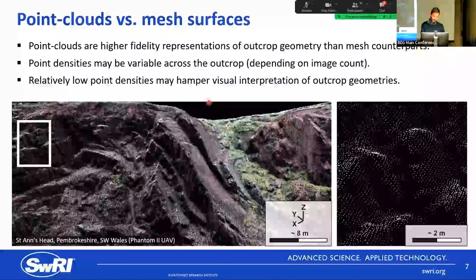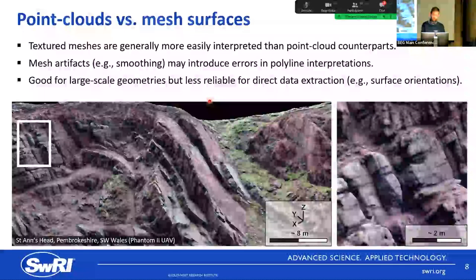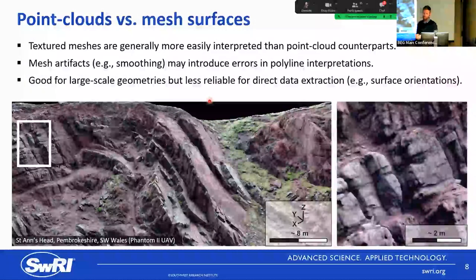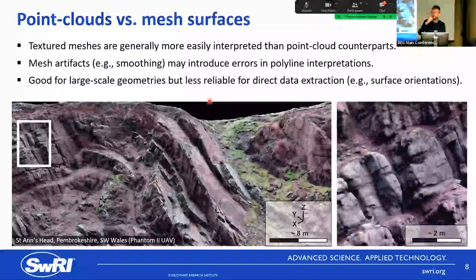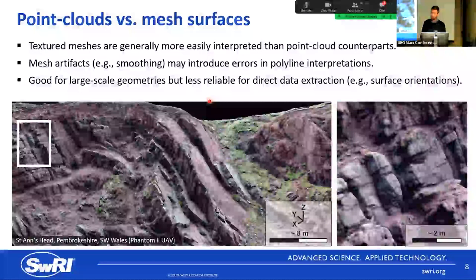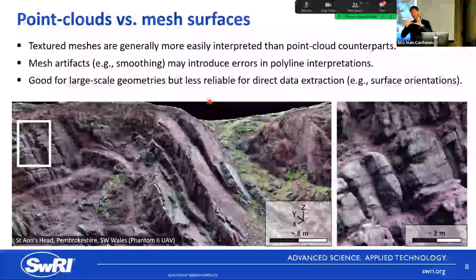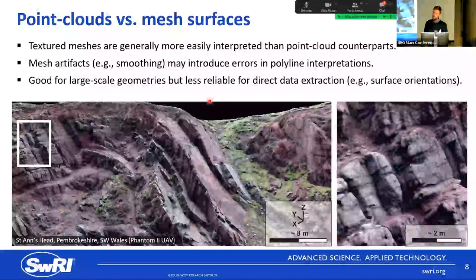The problem with point clouds is they're often not that good to look at, and picking beds or fractures in them can be tough. What a lot of people do is generate textured meshes by projecting the image onto the mesh. The textured mesh version looks way better and details are much clearer. For seismic-style polyline interpretation tracing horizons and faults, I generally use textured meshes — although geometrically they're not as accurate as point clouds, for visual representation they're better. They're good for large-scale geometries but less reliable for direct data extraction.